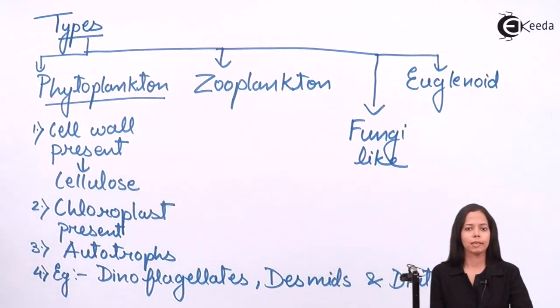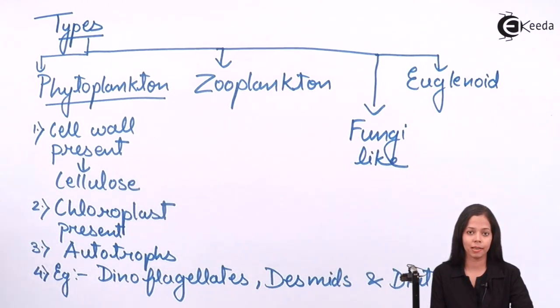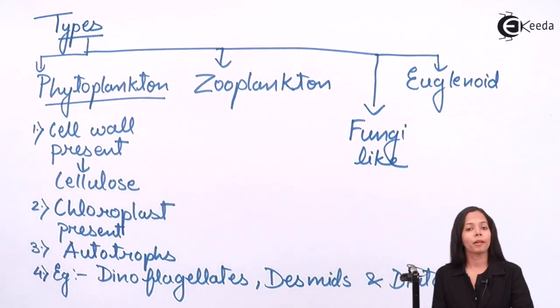Speaking about zooplanktons, zooplanktons show features opposite to phytoplanktons because they are animal-like protists. Let's compare the points. Point number one in phytoplanktons: cell wall present. In case of zooplanktons, cell wall is absent.